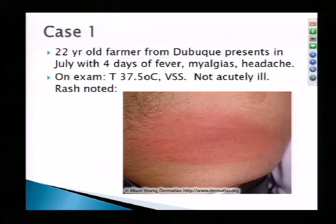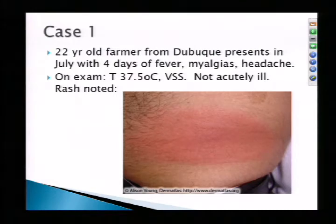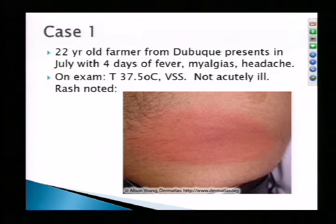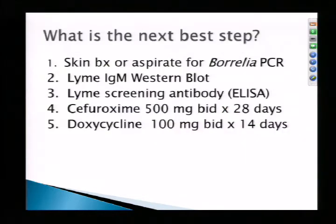During this talk I'm going to present some cases — this is the interactive part, so please raise your hands or speak up. Case one: a 22-year-old farmer from Dubuque who presents in July with four days of fever, myalgias, and headache. On exam his temperature was 37.5, vital signs were stable, he was not acutely ill, and this is the rash that was noted. What is the next best step? Options include skin biopsy or aspirate for Borrelia PCR, Lyme IgM Western blot with treatment depending on results, Lyme screening antibody, cefuroxime 500mg BID for 28 days, or doxycycline 100mg BID for 14 days.